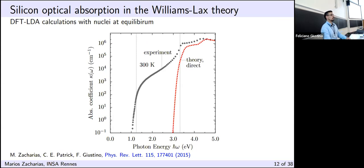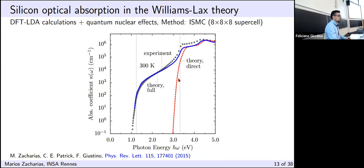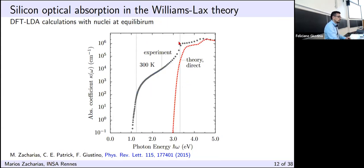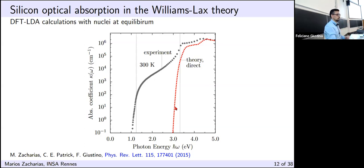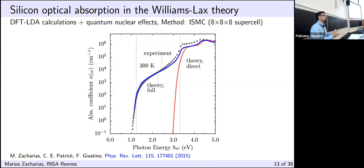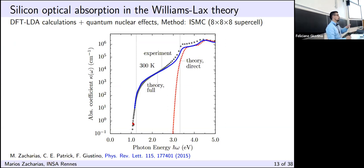We applied importance sampling Monte Carlo for silicon, where we have nice data to benchmark against theory and experiment. First, we calculated the spectra with nuclei clamped at their equilibrium positions — no displacements — and the result shows no absorption below the direct gap energy of silicon because we don't include any phonon-assisted transitions. However, when we account for nuclear displacements, we can include phonon-assisted transitions precisely, and they match the correct absorption onset — we don't need to shift the spectra. We see excellent agreement with experiment; some deviations are mainly due to not including excitonic effects.